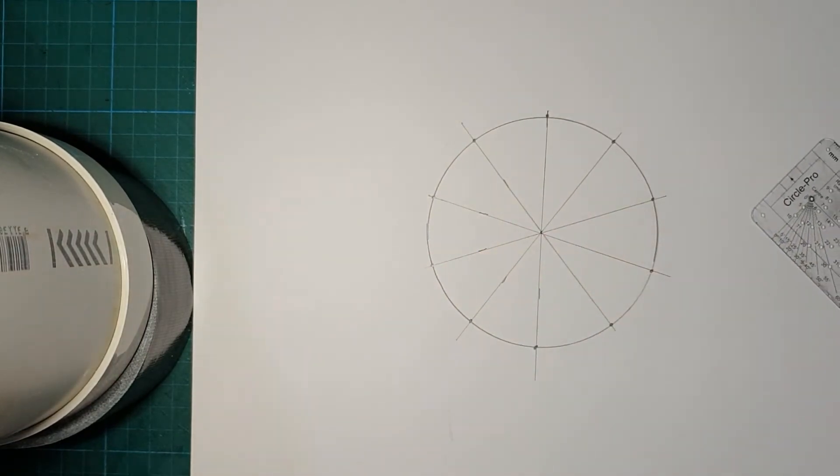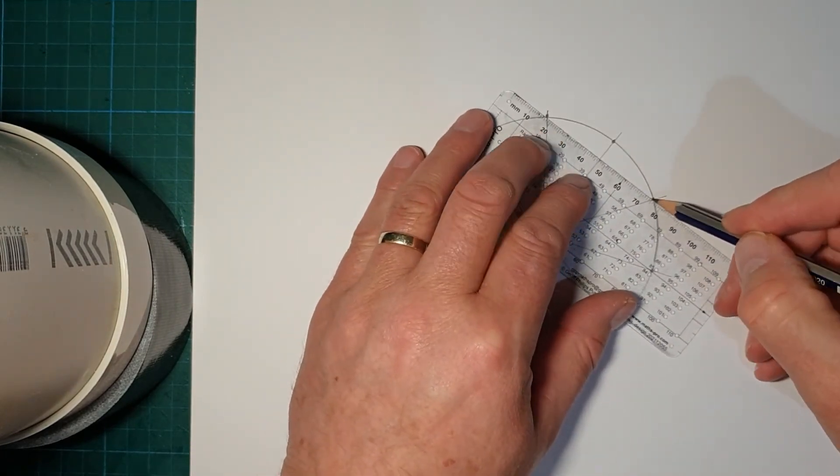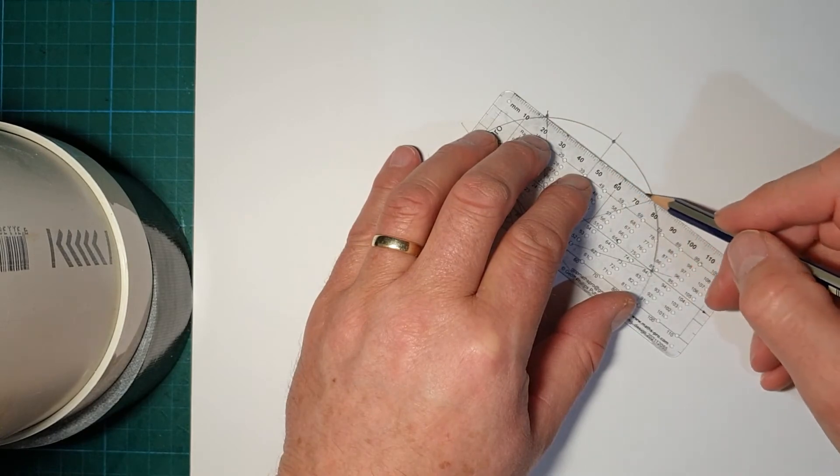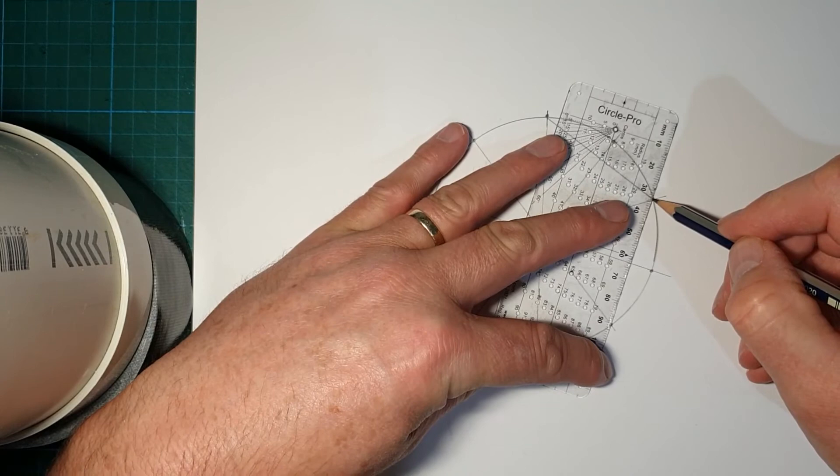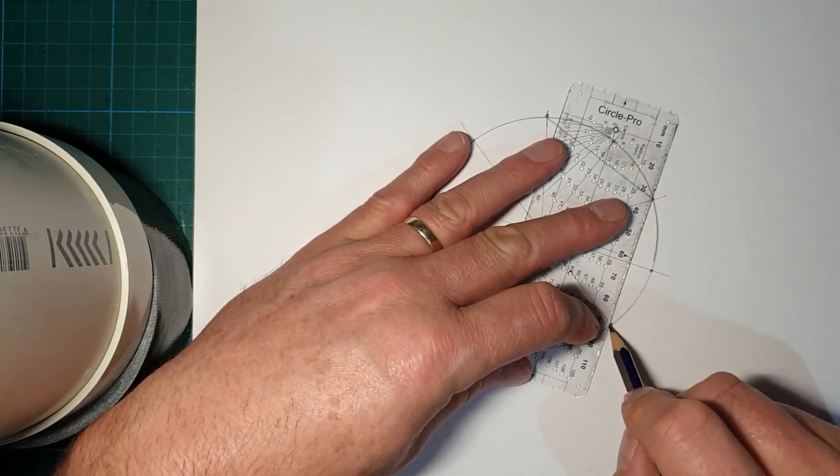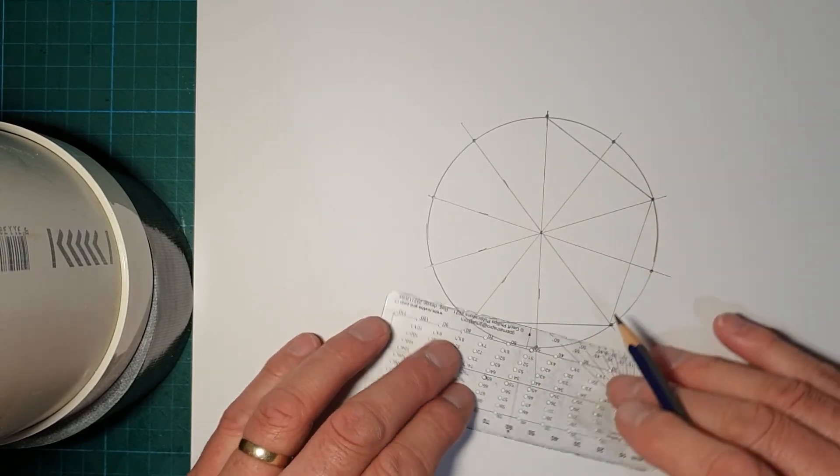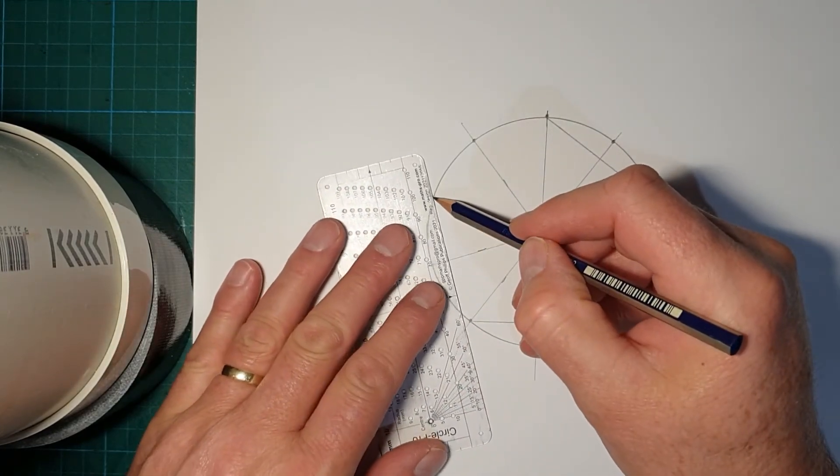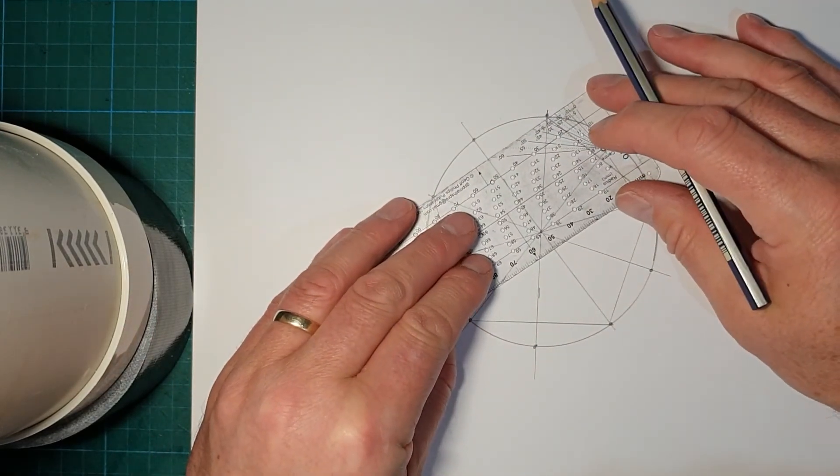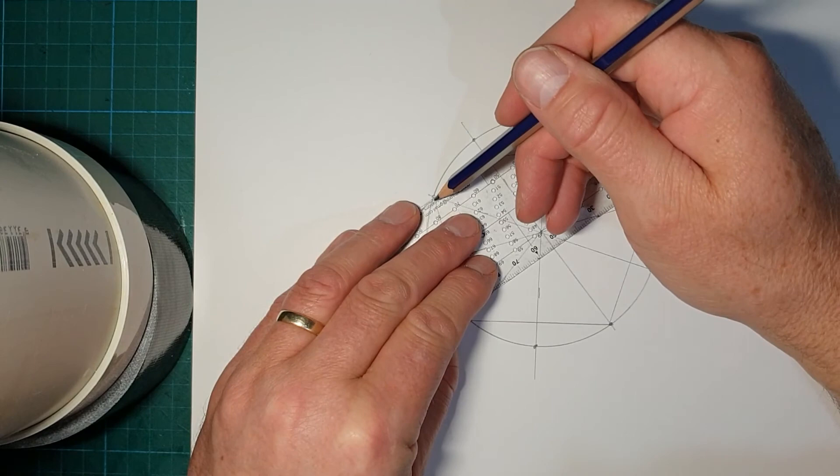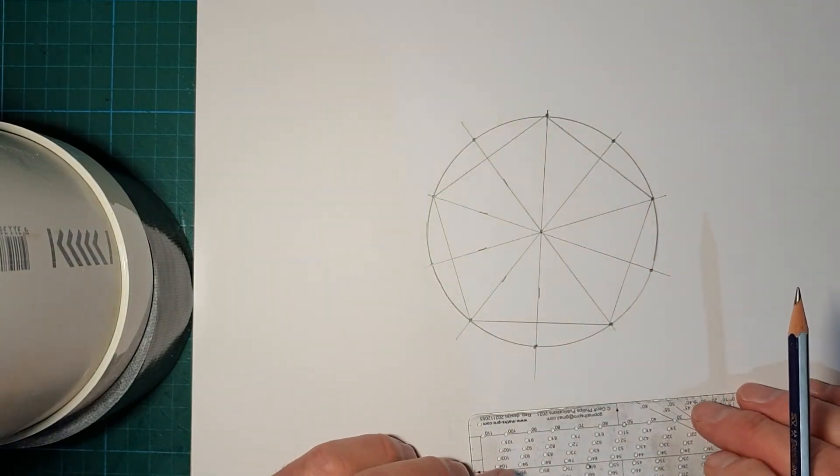So we can join every second point to form a pentagon. I'll go by the intersection with the circle rather than the dot if the dot's a little bit off. And the final side. And there we have a pentagon inscribed in a circle of radius 50 millimeters.